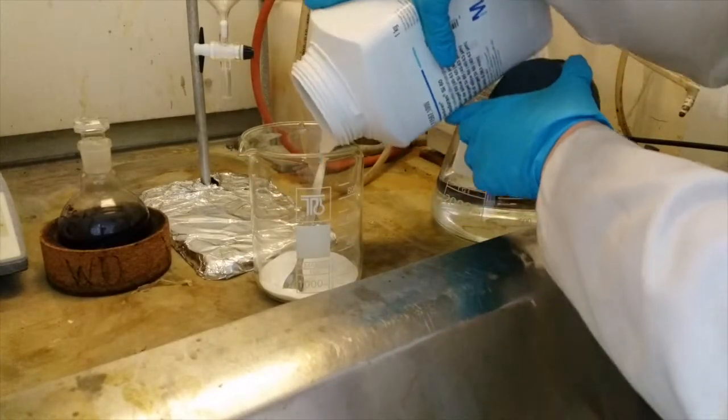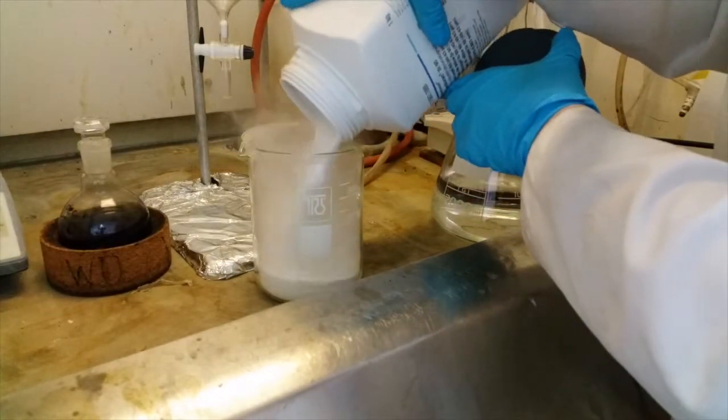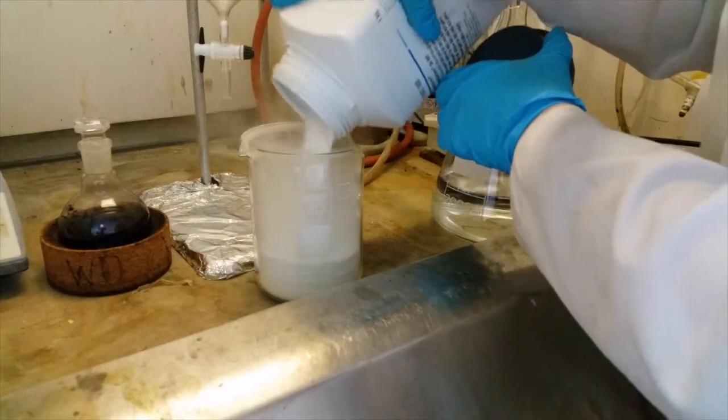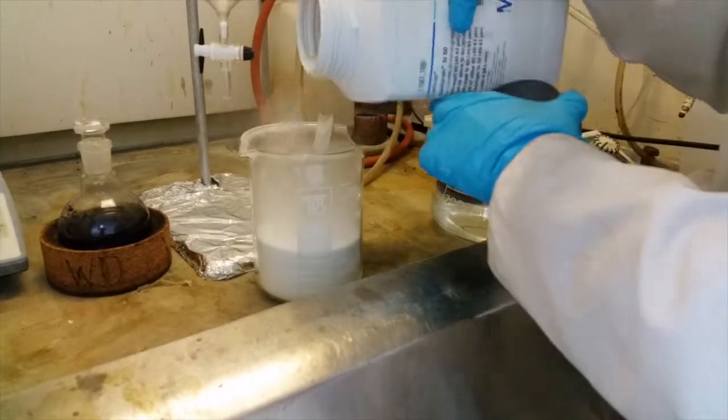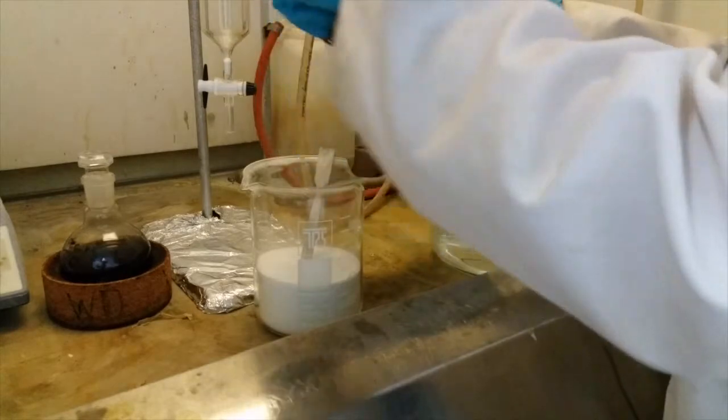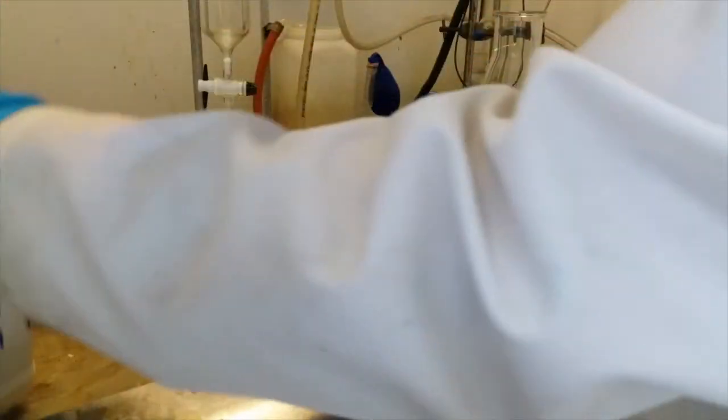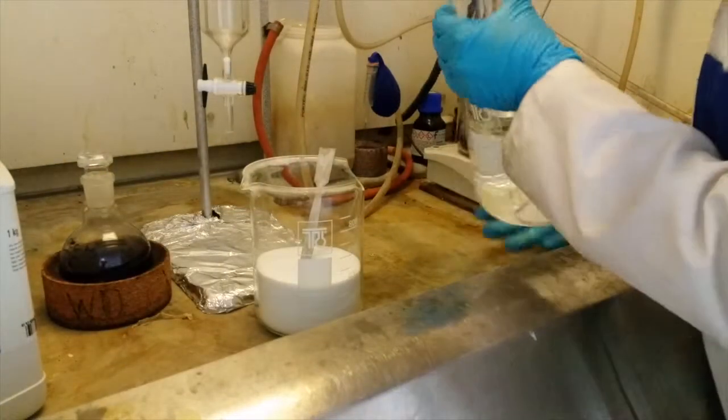Next you need to add the silica to your column. In order to do this we use a wet loading technique. To do this add the silica into a large one litre beaker. It's very important to do this step in the fume hood as the dust is very dangerous if you inhale it.